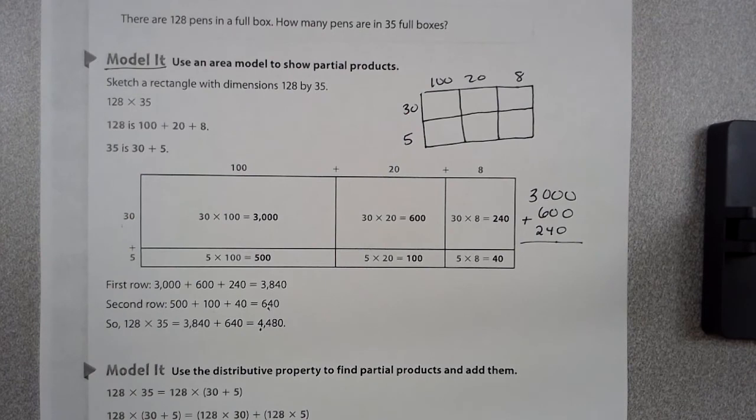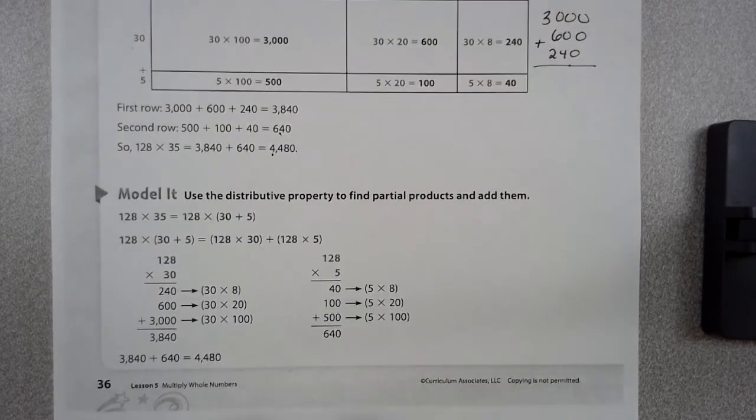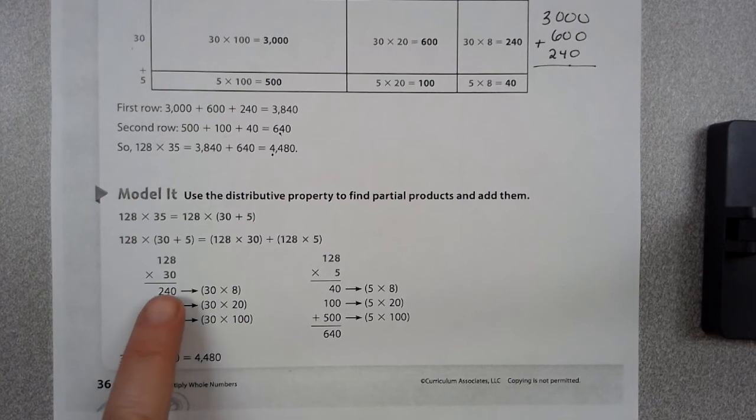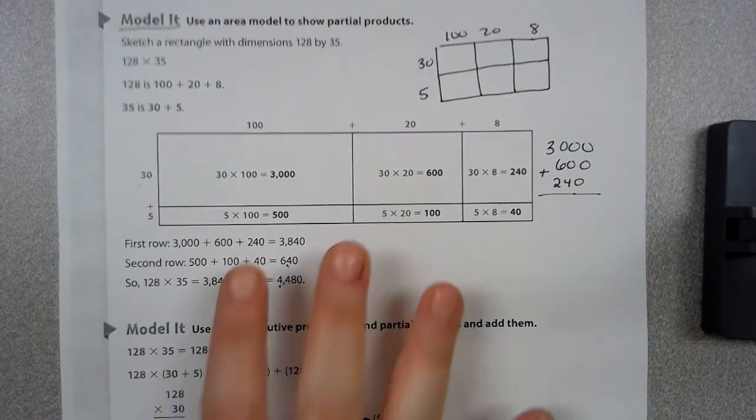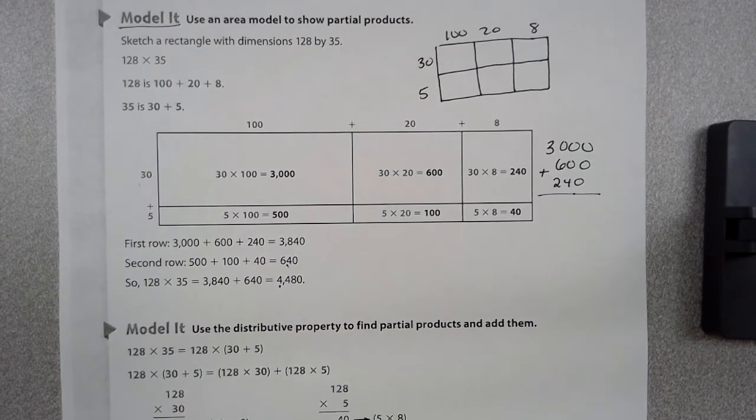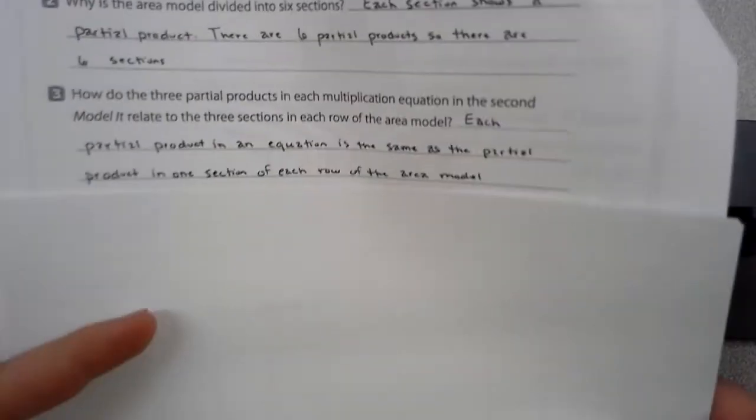Number three asks, how do the three partial products in each multiplication equation in the second model relate to the three sections in each row of the area model? So you're looking right here. How did these partial products relate to the area model up here? Think about it.